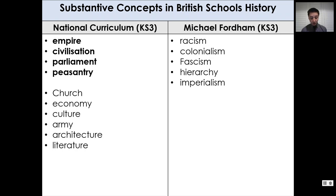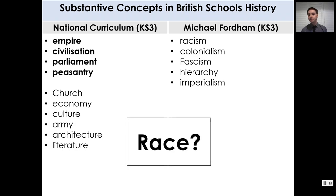Incidentally, race and its obvious corollary racism are absent from the National Curriculum. A more detailed attempt to collate standard concepts was coordinated by Michael Fordham in 2017. His list for Key Stage 3 does include the concept of racism, along with a number of connected concepts such as colonialism, fascism, hierarchy, and imperialism. And yet in both cases, the substantive concept of race seems conspicuous in its absence. I think this is remarkable, given that race is, if you like, a raw ingredient in racism and associated concepts.